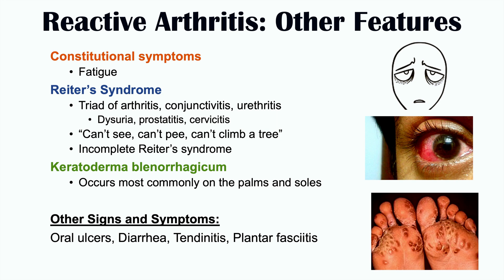There can be a wide variety of signs and symptoms in reactive arthritis. Most characteristically, we'll see a bacterial infection that occurred one to three weeks in the past, followed by sudden onset of arthritis. If Reiter's Syndrome is occurring, we can see the triad of conjunctivitis, urethritis, and arthritis, along with these other nonspecific signs and symptoms.